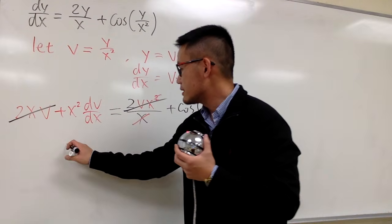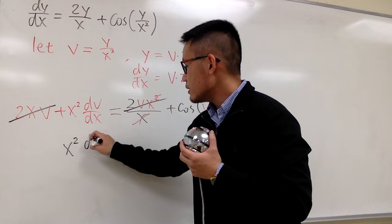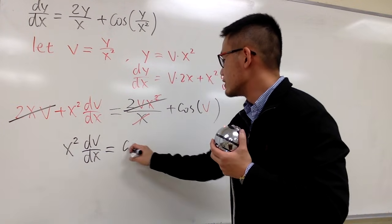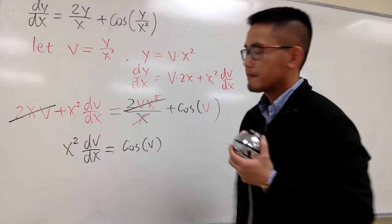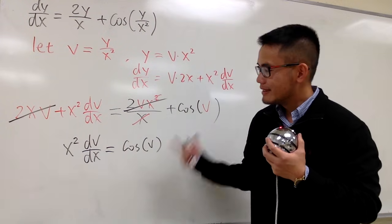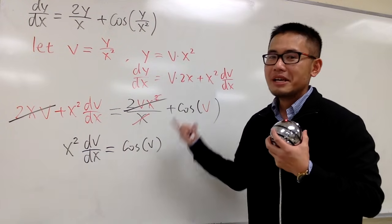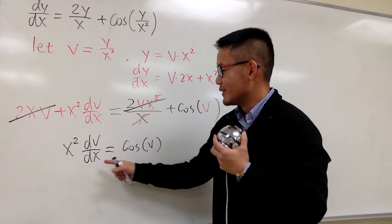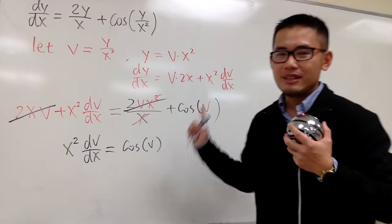All in all, we just have this. x squared, this is dv/dx, and this is equal to cosine of v. Okay, I think now we can see what's going on, and we can actually solve it, right? Because we can just simply separate the variable.